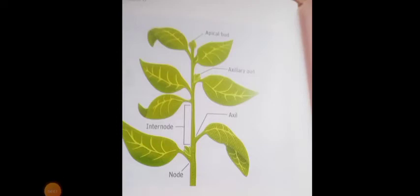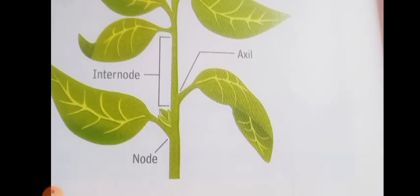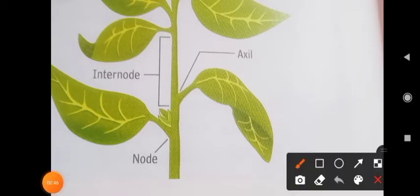Now we are going to discuss about the shoot system. So far we have discussed the root system. The shoot system is the part of the plant which grows above the soil. Through the stem, the plant is able to get water and minerals. The stem transports the water and minerals from the roots to other parts like flowers, buds, and leaves. The stems have joints called nodes, from where the leaves and branches arise.